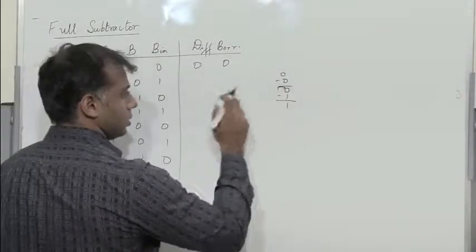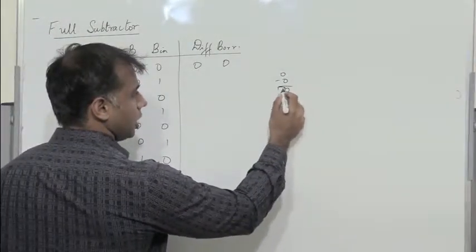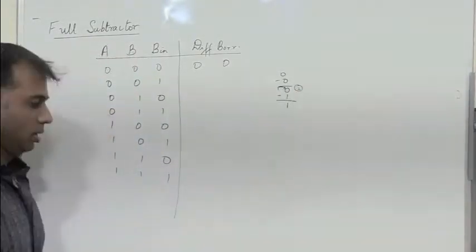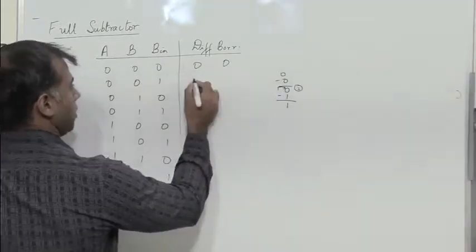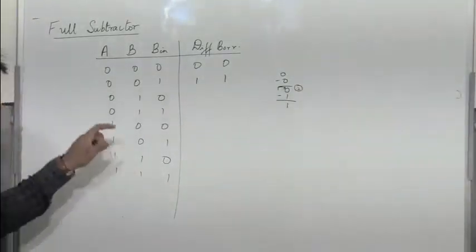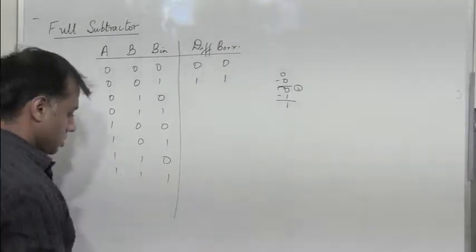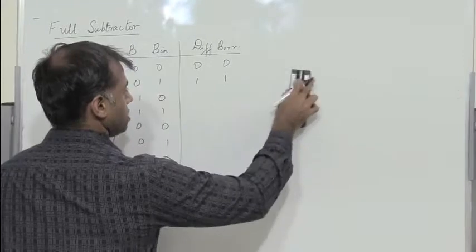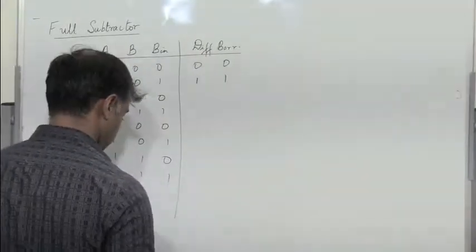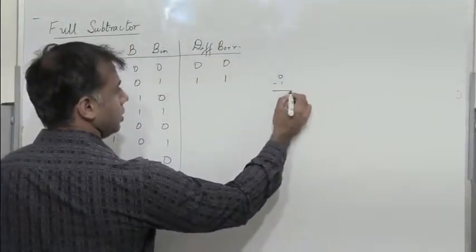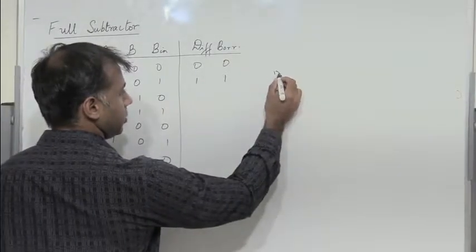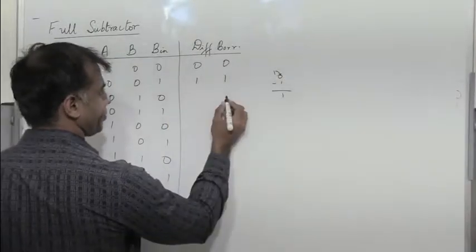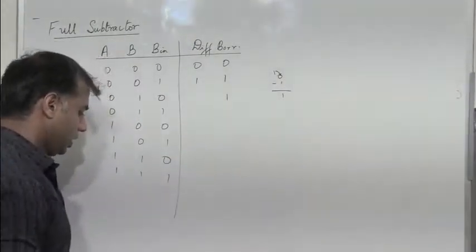When I have 0 minus 1, I need a borrow. When I borrow 1, this becomes 10, which is 2 in decimal. So 2 minus 1 gives a difference of 1. We get difference 1, borrow 1. Next, for 0 minus 1, I definitely have a borrow and a difference, so I will enter 1 for the borrow.